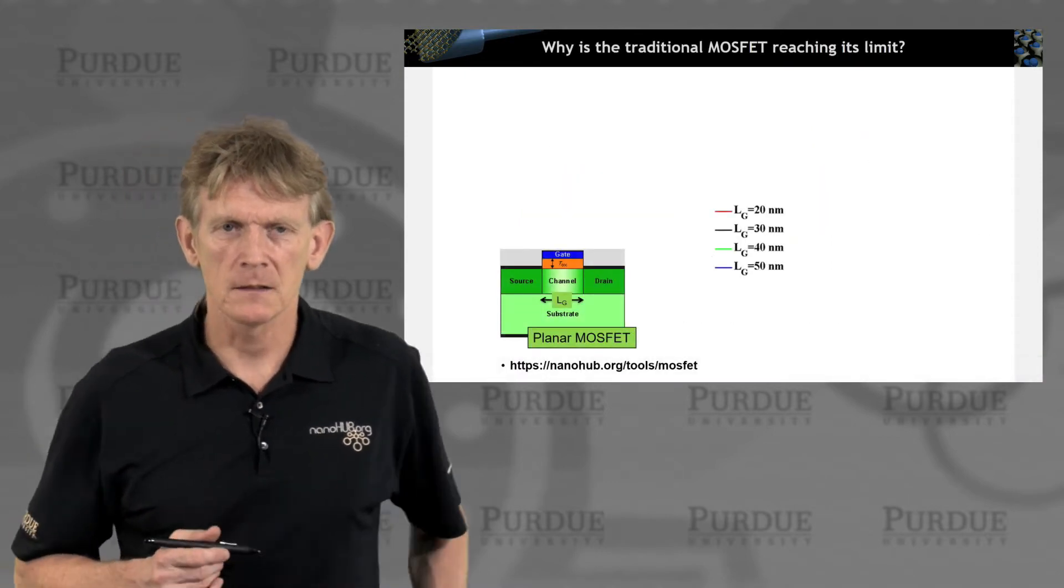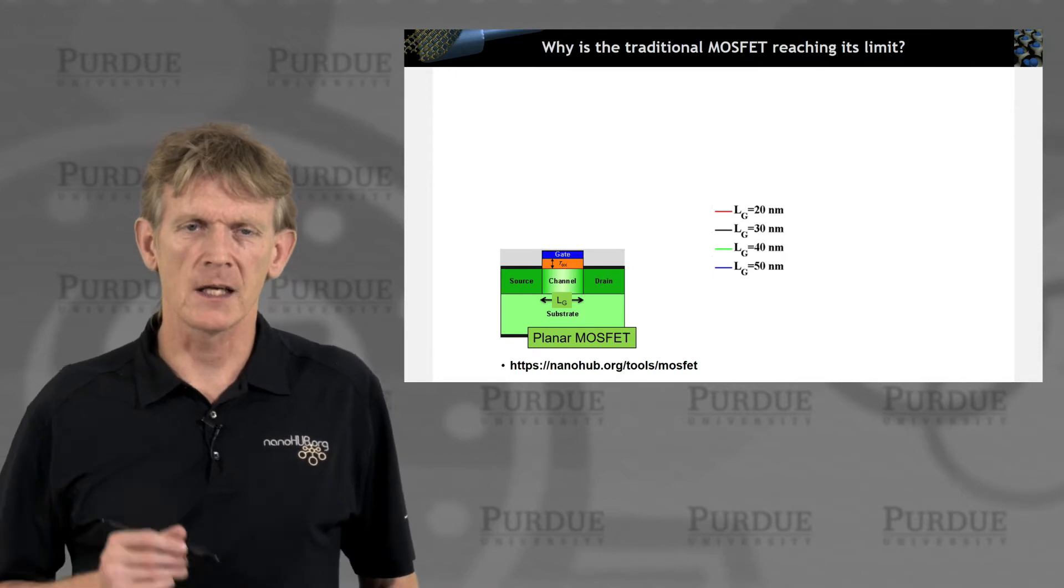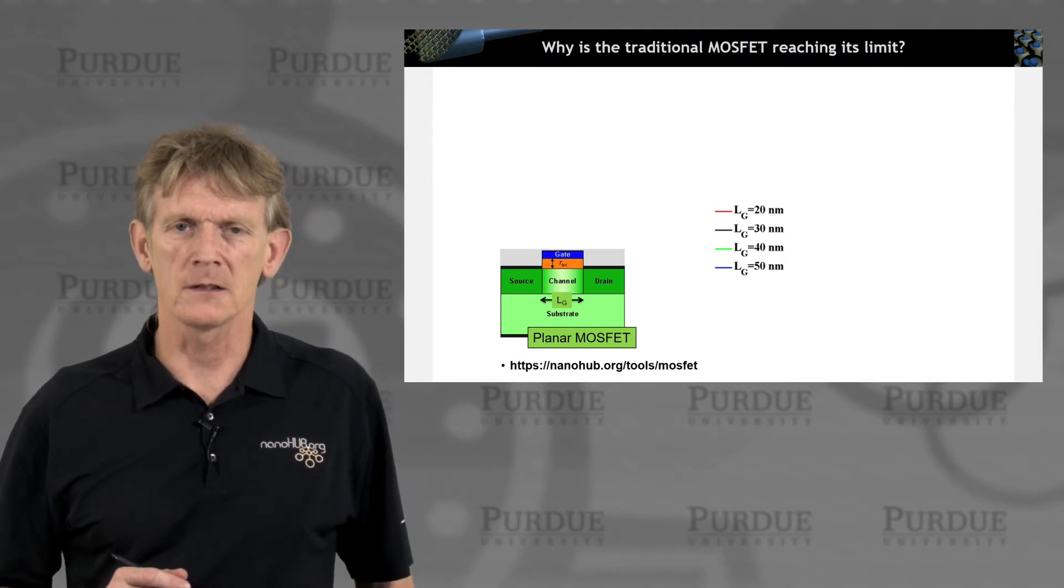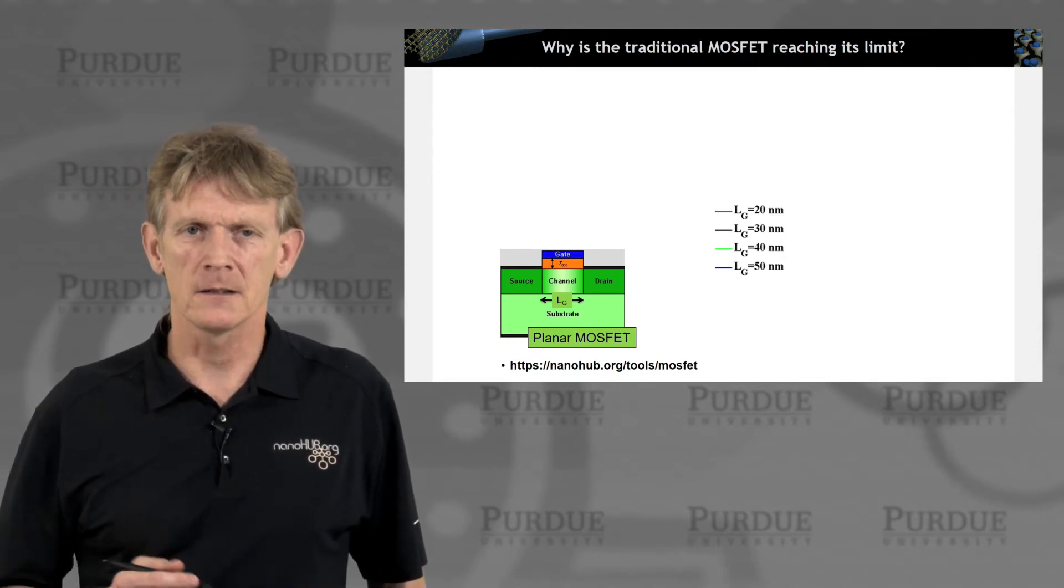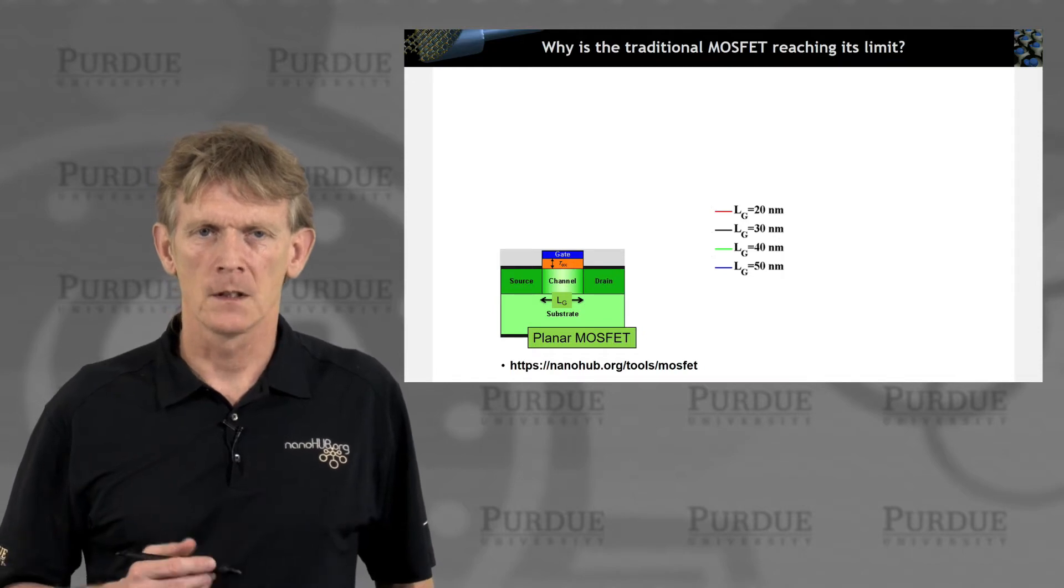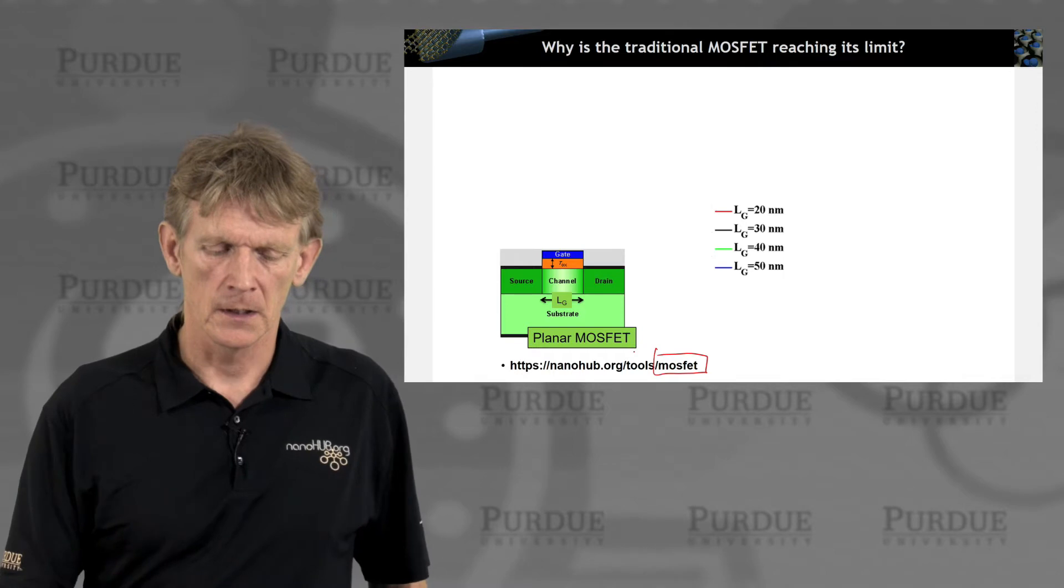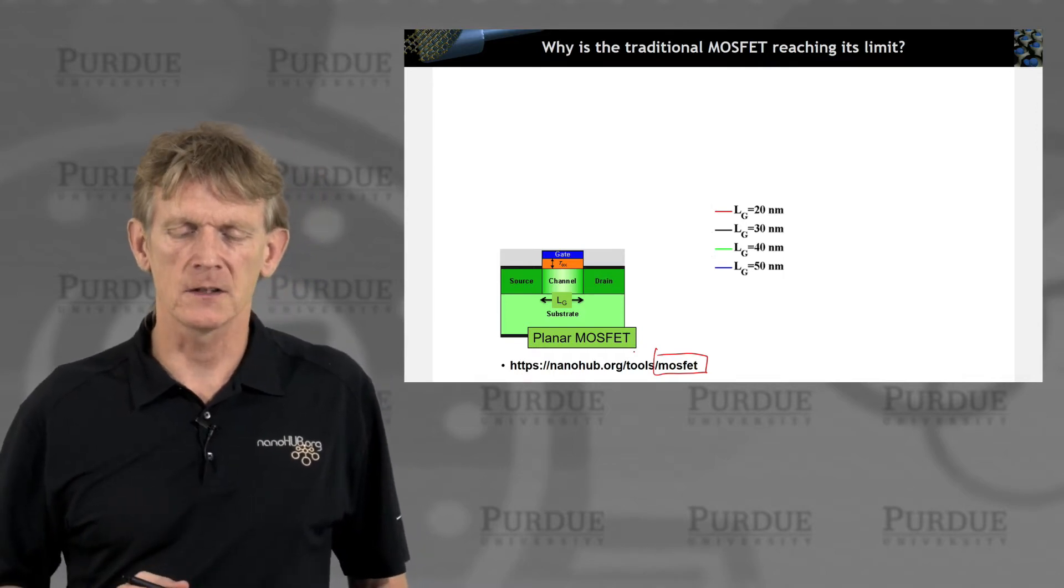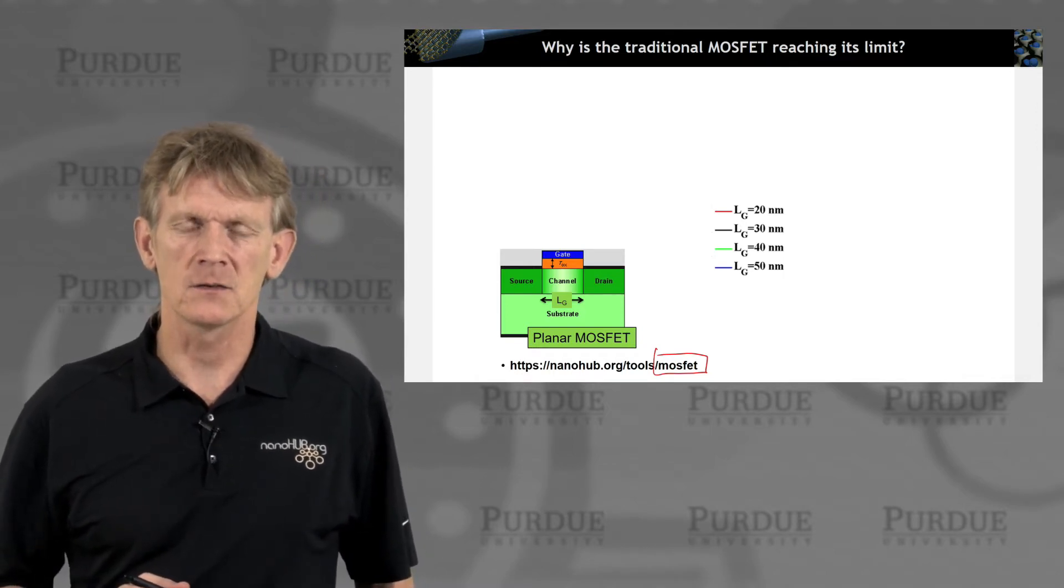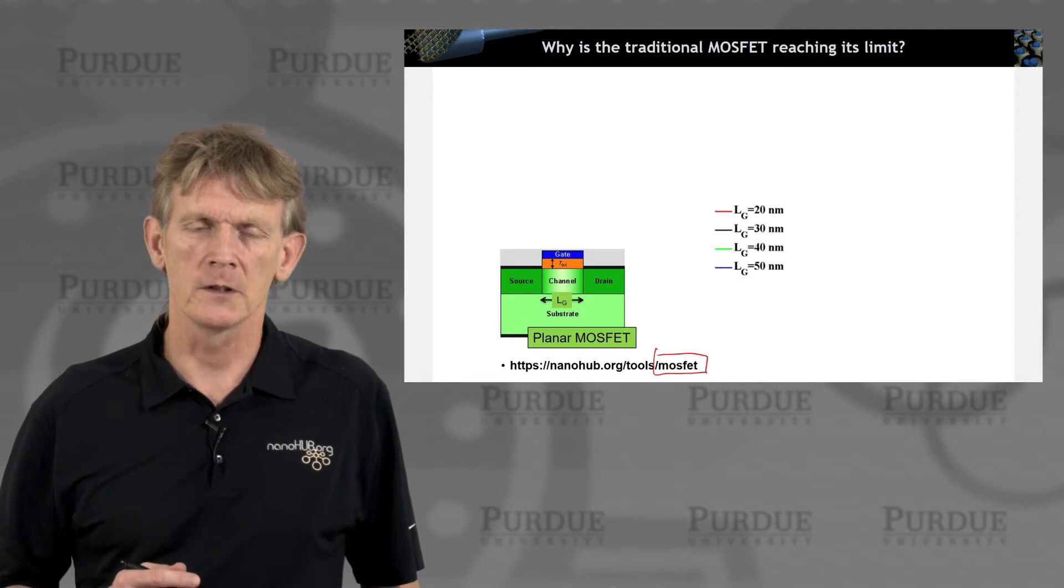If you stick the just simple scaling and making a gate smaller and smaller into a standard simulation tool that you can find on NanoHub, like this MOSFET tool, and you take your standard device and you make the gate smaller and smaller, what will you find?